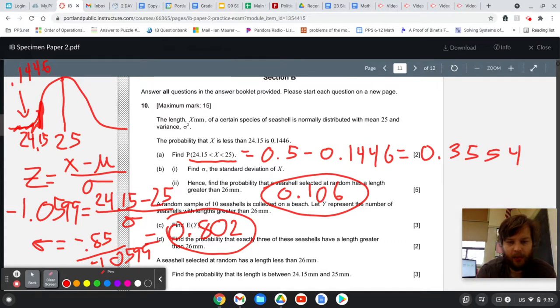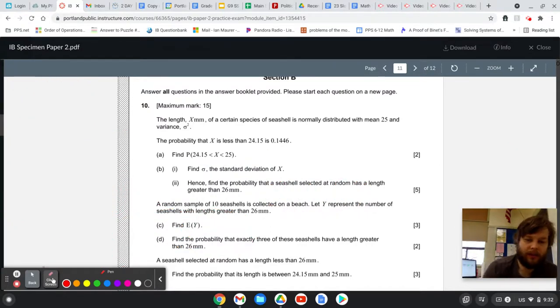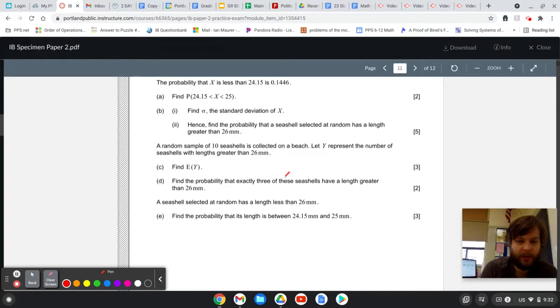Now, I'm going to keep that number, and I'm going to erase the rest of the board, because we're actually going to use that number to answer the next question. So 0.106, that's our probability. So when we look at a question here, where it sort of shifts. It shifts from looking at a continuous probability distribution to thinking about it as a discrete probability distribution. So you have 10 seashells, and we're looking at those that have lengths greater than 26.